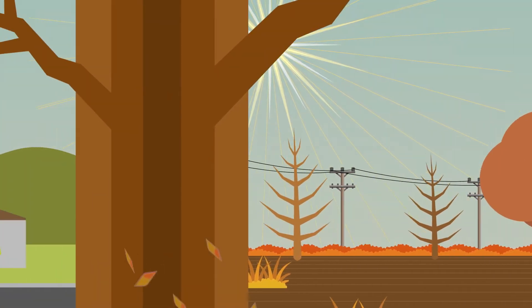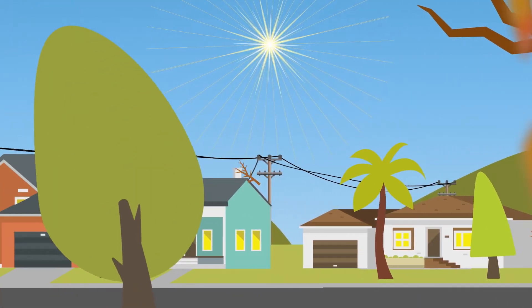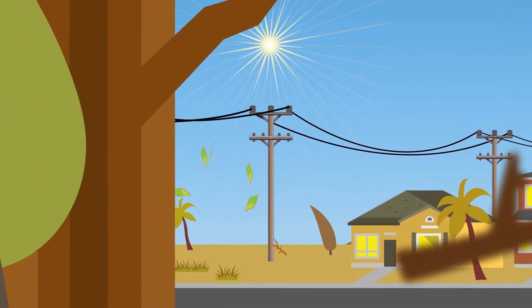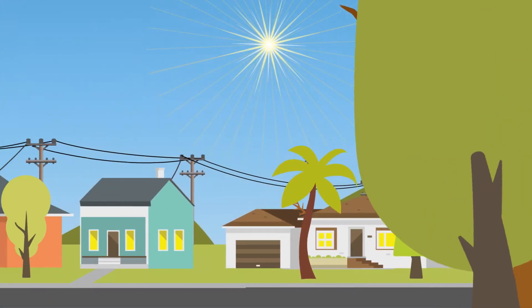Combined, these create the risk of an ignition from our equipment. Although our poles and wires are built to withstand strong winds, flying debris poses a major risk.